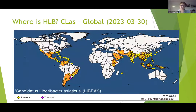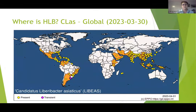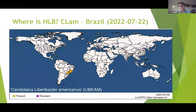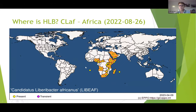So where is HLB? It depends on the species of Liberobacter you're talking about. This is from the EPPO Database, and as you can see, for the Asiaticus species it's globally distributed — it's in lots and lots of major citrus growing areas. The date in brackets is when that map was last updated. The Americanus is basically still, as of last year, restricted to Brazil, and the Africanus one is pretty much Africa. So there's a big difference in geographical spread of the three species.